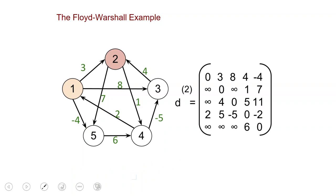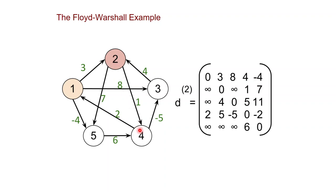In the next iteration we compute D superscript 2, now allowing intermediate vertices at most 2 — so you can use vertex 1 or 2. The entries that change are: entry 1,4 changes to 4 (it was infinity, now you can do 3 plus 1); entry 3,4 changes to 5 (from 3 to 4, you can go to 2 and then to 1); and entry 3,5 changes to 11 (you can do 4 plus 7).